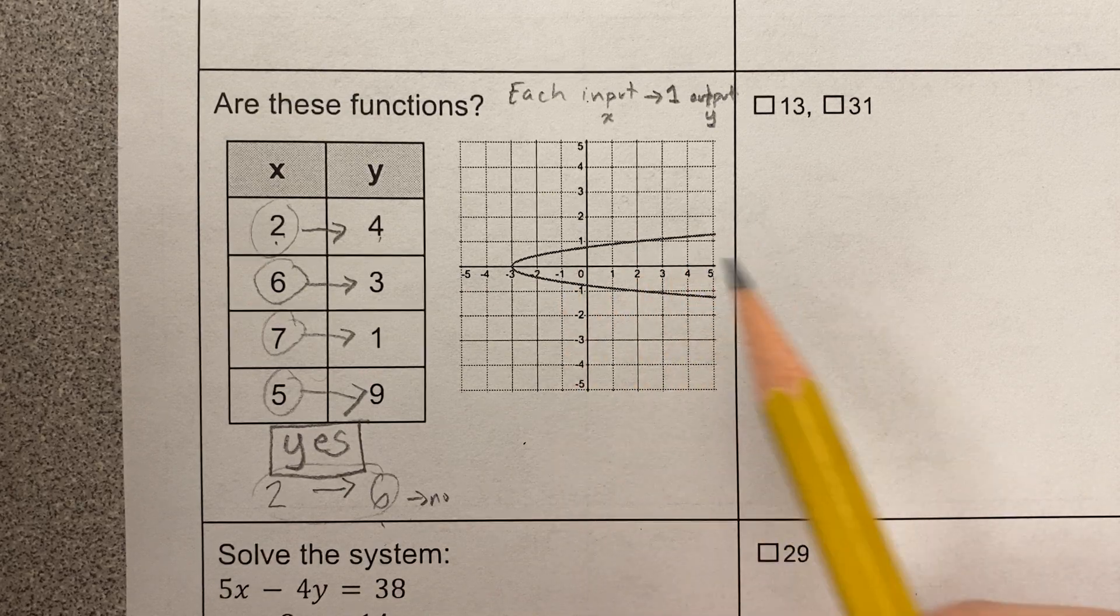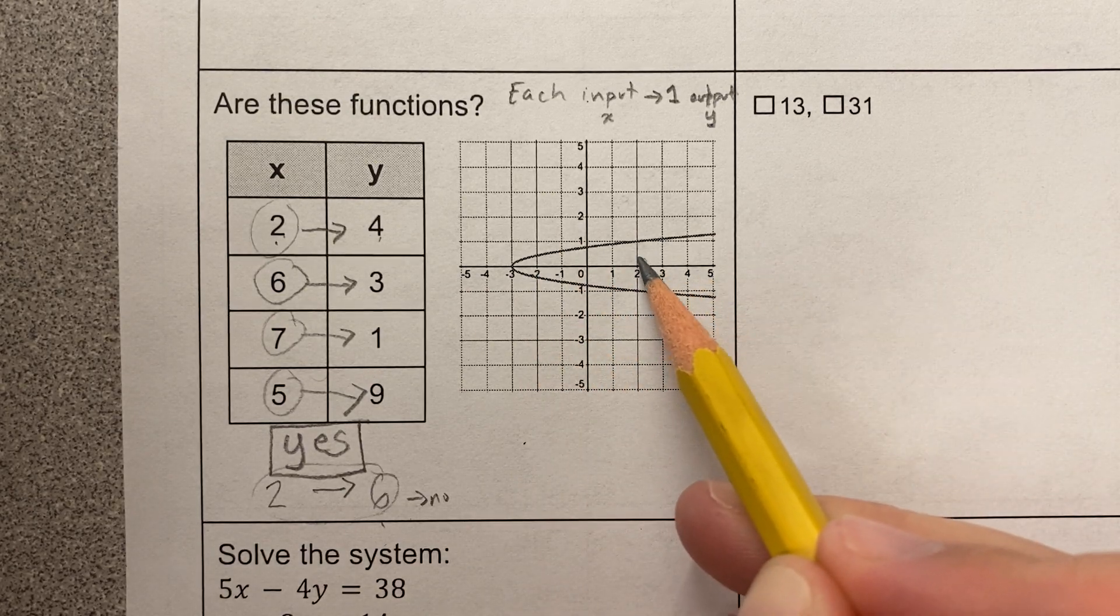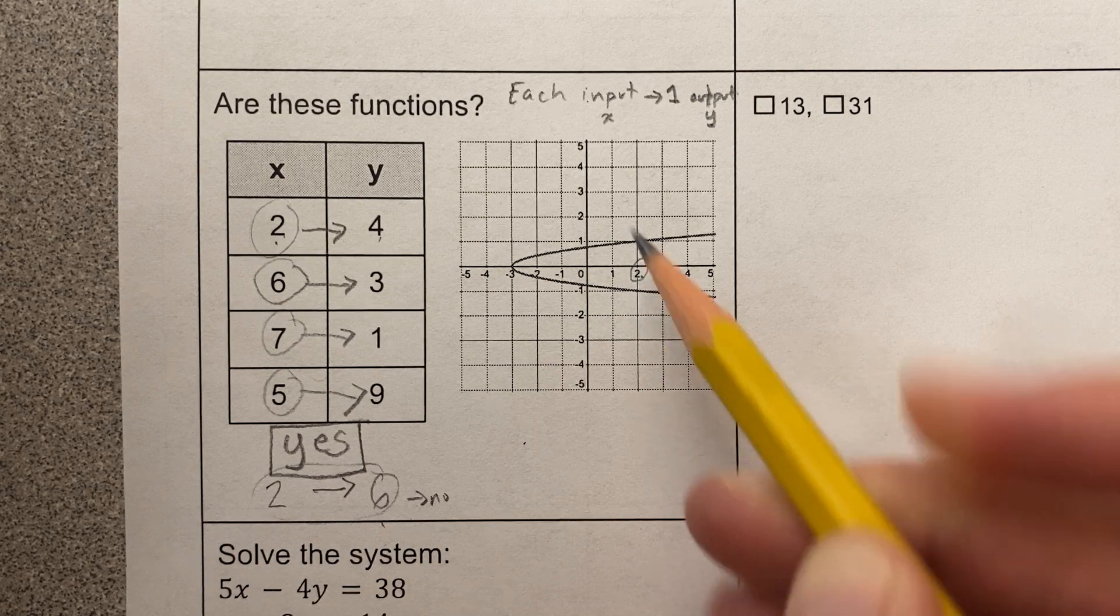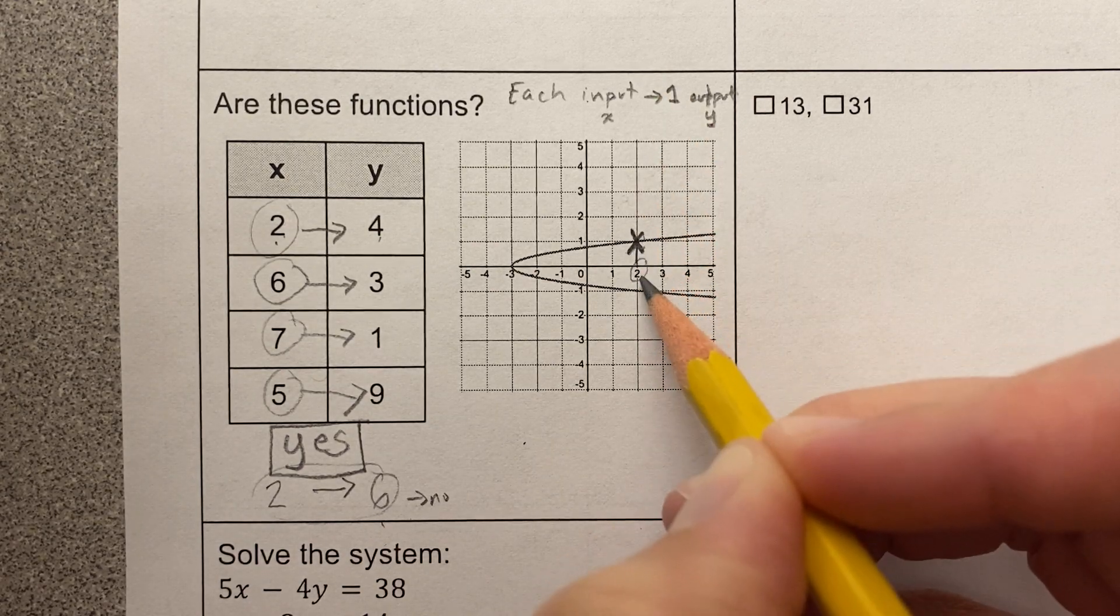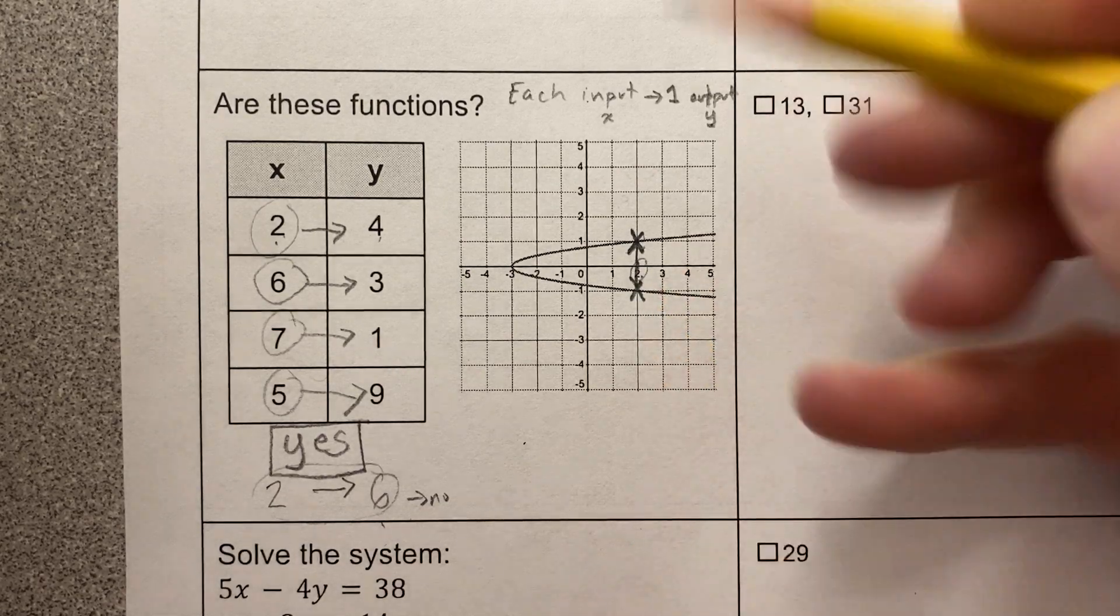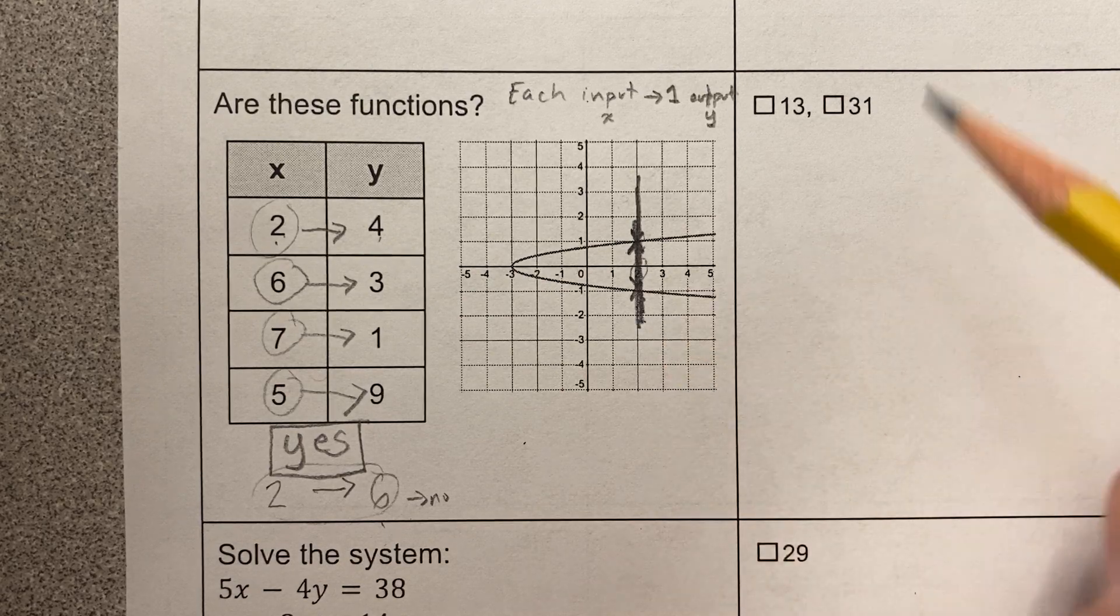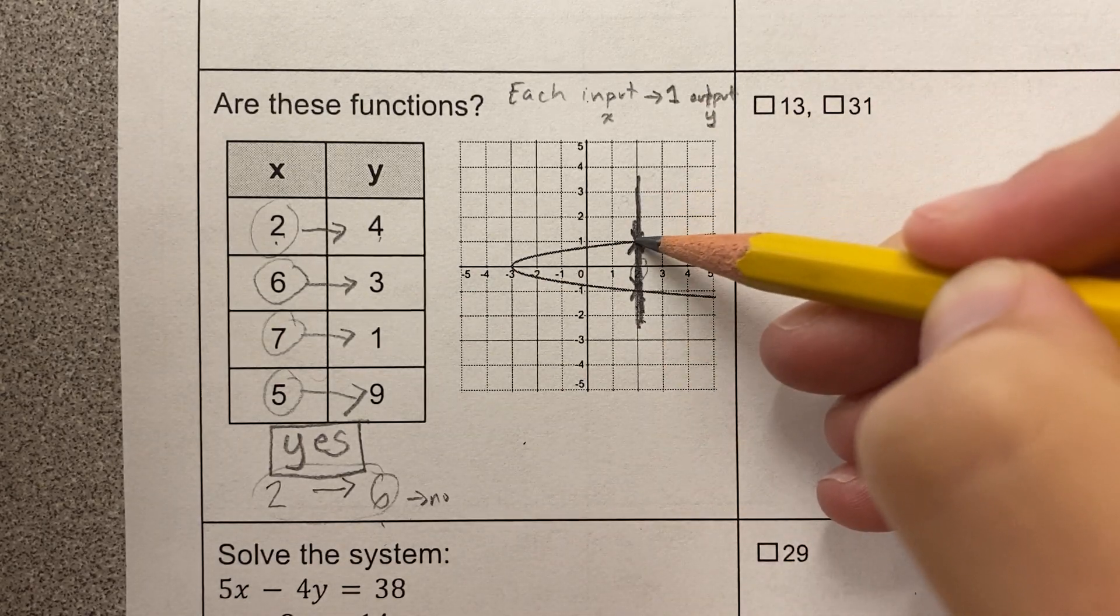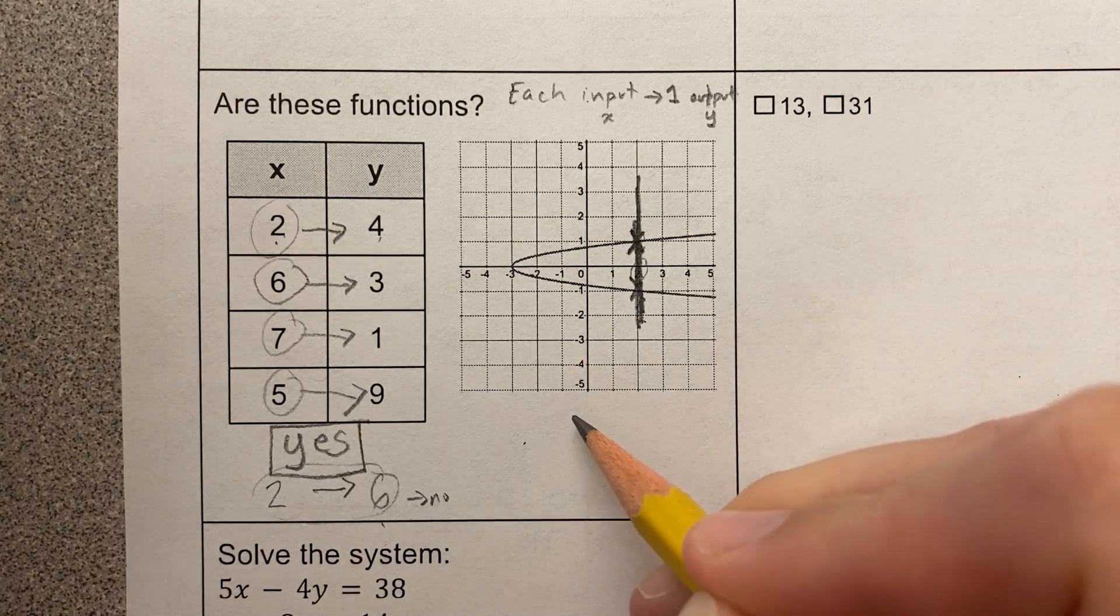Okay, now here I'm looking at a graph, and here what I notice, like, let's just take a random x value. Let's take the x value 2. This input of 2, this x value of 2, actually has two outputs, one right here and one right here, right? There's two y values on that one x value, and notice what that looks like is a vertical line is touching in two places. So this is a no.